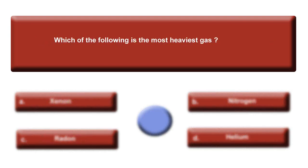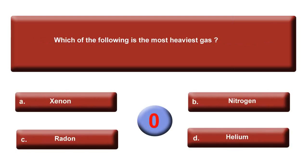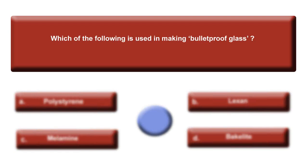Next question: Which of the following is the heaviest gas? Option A: Xenon. Option B: Nitrogen. Option C: Radon. Option D: Helium. Your time is up. The answer is C, Radon.